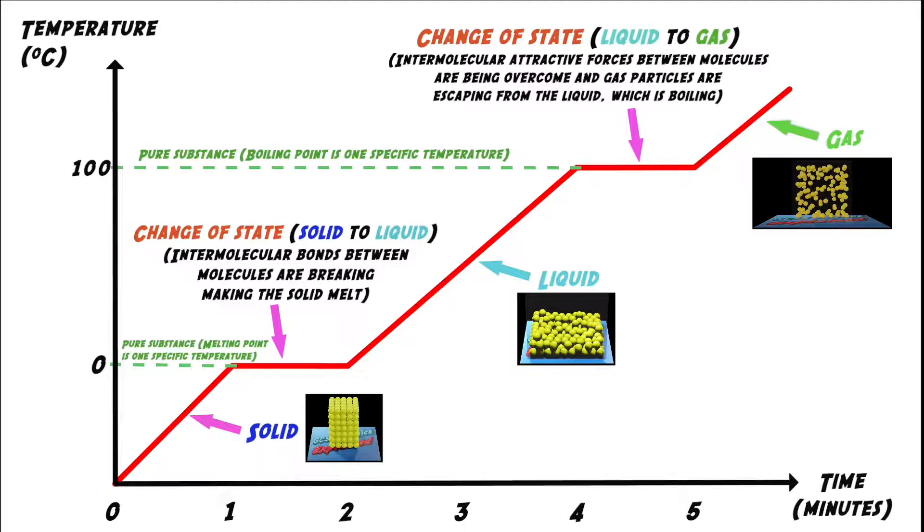Now I'm going to show you what a temperature time graph looks like for an unpure substance. In other words, a mixture, so you can see the difference. I'm representing the unpure substance with a blue line. It's unpure water, so it starts off pretty much the same as pure water. However, the impurities in the water lower the melting point, which is also the freezing point, so the flat section starts at a lower temperature.